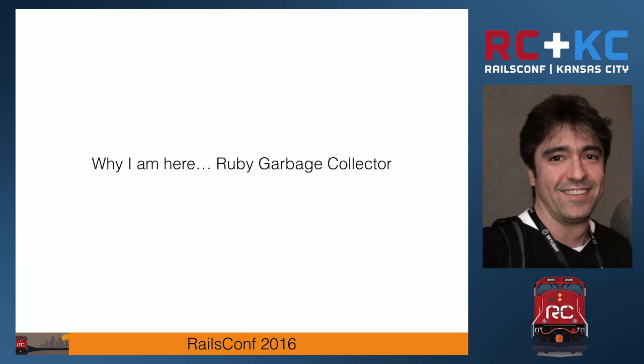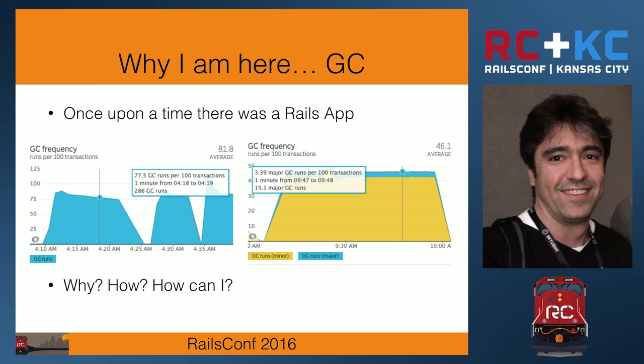So why am I here talking about the garbage collector? Once upon a time, there were five Rails apps in production, living long and prospering. But we didn't have a lot of insight into how they were behaving. So proactively, the company decided to install one of these full-featured monitoring tools with fancy charts. That's how all this got started — we installed this monitoring tool and started seeing data. I was looking at it and I was like, on the left side I have everything mostly blue — it only says GC runs. On the right side I have mostly yellow with a little bit of blue, and it shows minor and major.